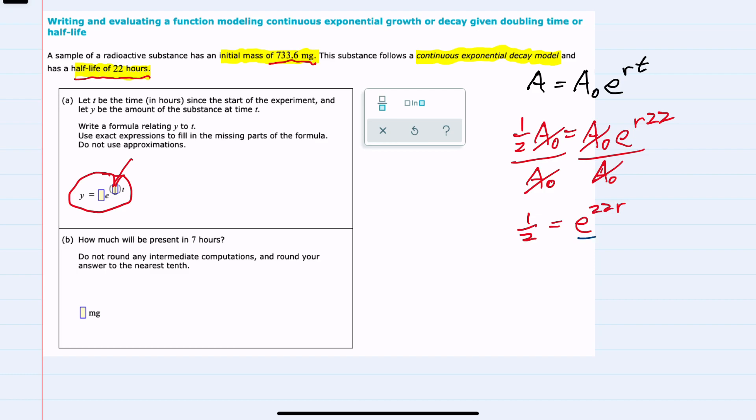Since I have a base e, I'll take the natural log of both sides. This gives me the natural log of one-half on the left, and simplifies to just 22r on the right-hand side. And from here, I can solve for r, and we see that r equals the natural log of one-half over 22.